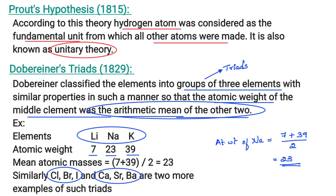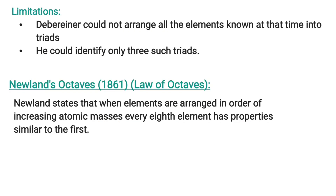Döbereiner identified three triads: lithium-sodium-potassium, chlorine-bromine-iodine, and calcium-strontium-barium. However, difficulty arose when Döbereiner could not arrange all the elements known at his time into triads — he could identify only three triads. These are the limitations of Döbereiner's Law of Triads.